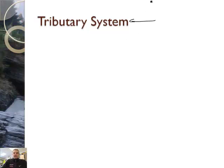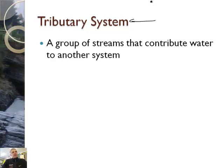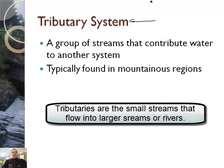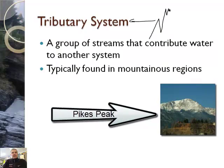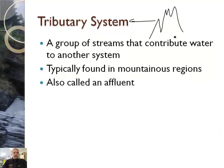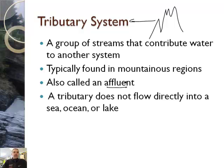Let's talk about the tributary system. A tributary is a group of streams that contribute water to another system — essentially small streams that feed larger streams. It's typically found in mountainous regions. Here in Woodland Park, Colorado, we live in the mountains, and all the streams we find here are tributary streams. They're also called an affluent — just a different name for the same thing. A tributary does not flow directly into a sea, ocean, or lake; it's a river that flows into another river.